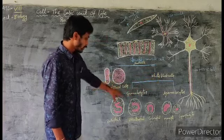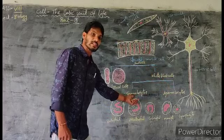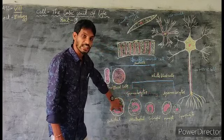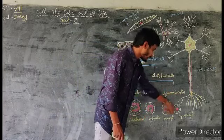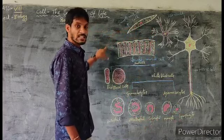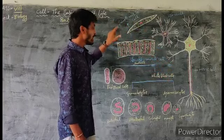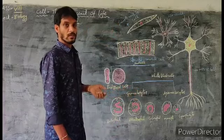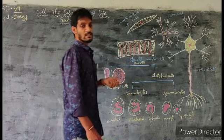White blood cells are of mainly two types: granulocytes and agranulocytes. Granulocytes are of three types: basophils, neutrophils, and eosinophils. Agranulocytes are of two types: monocytes and lymphocytes. These are some of the different types of cells present in our body. If you observe these cells, they are different in their shape, size, and structure. Different types of cells have different functions — each cell has its specific function.